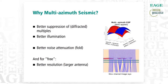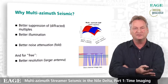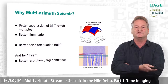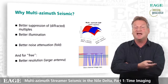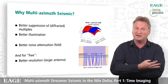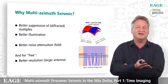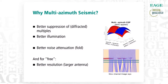Also, by acquiring data in different directions, you get better illumination because you may be able to undershoot some of the smaller Messinian features. More data means more fold, which generally reduces noise levels. And the other benefit you get is that you effectively have a larger antenna and therefore should also get better resolution.